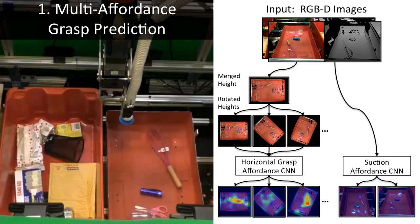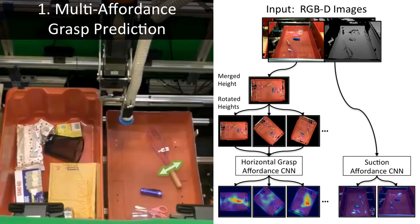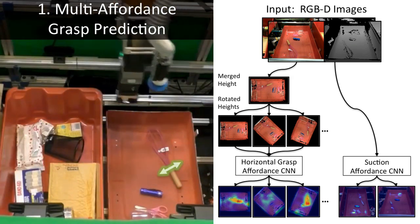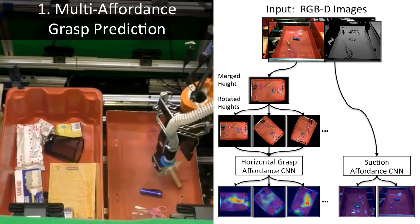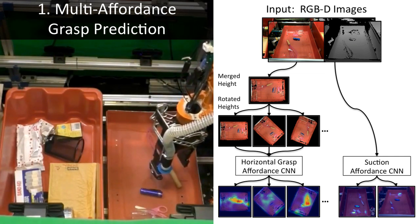Based on these affordance predictions, a heuristic-based planner then decides which picking behavior to execute. Here, the system decides to grasp the handle of a whisk at an angle, since it has a high affordance value.